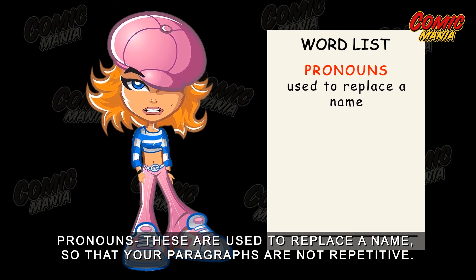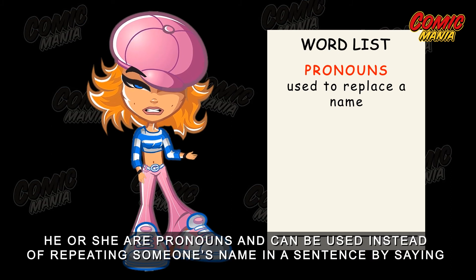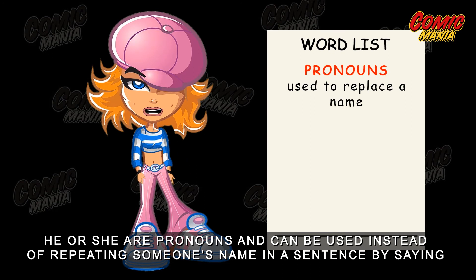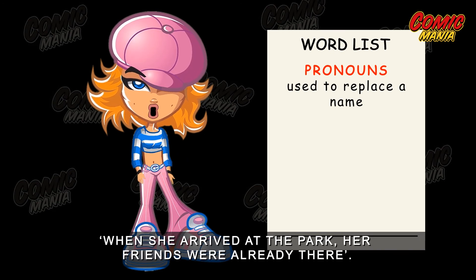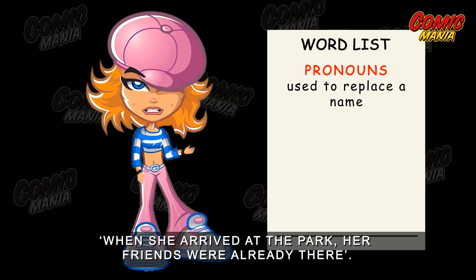Pronouns. These are used to replace a name, so that your paragraphs are not repetitive. For example, 'he' or 'she' are pronouns and can be used instead of repeating someone's name in a sentence by saying, 'When she arrived at the park, her friends were already there.'